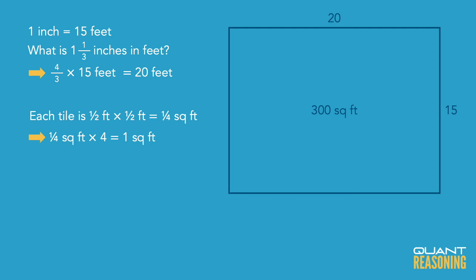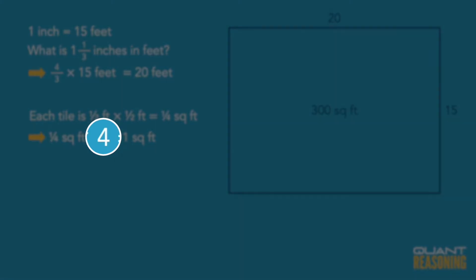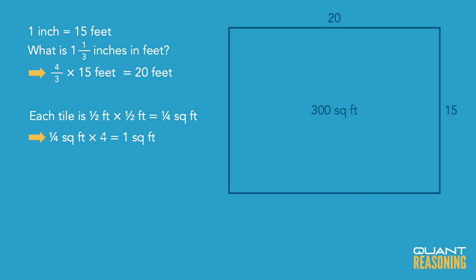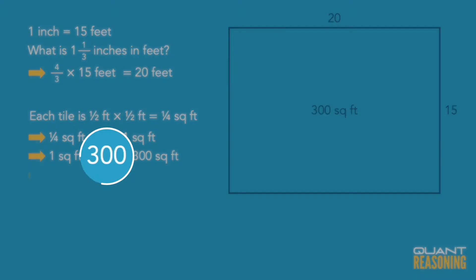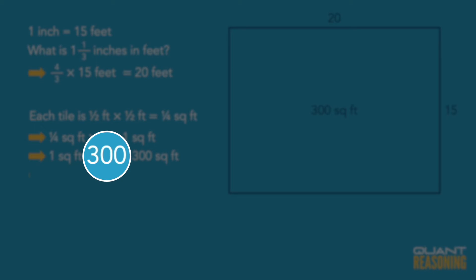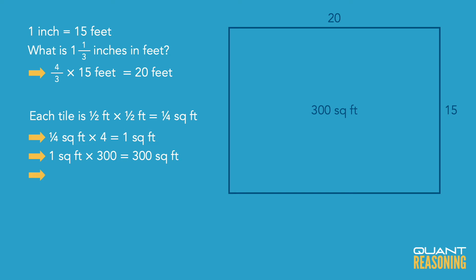So how many 1/4 feet squared tiles would we need to cover 300 square feet? A quarter fits 4 times into 1 unit, and 1 unit fits 300 times in 300, so 4 times 300 is 1,200. Looking at the answer choices, it looks like we're good with answer choice E.